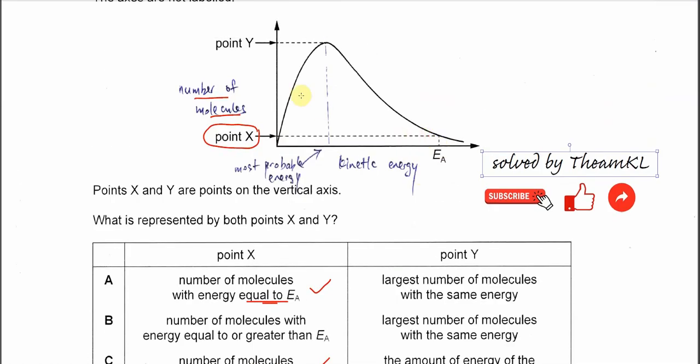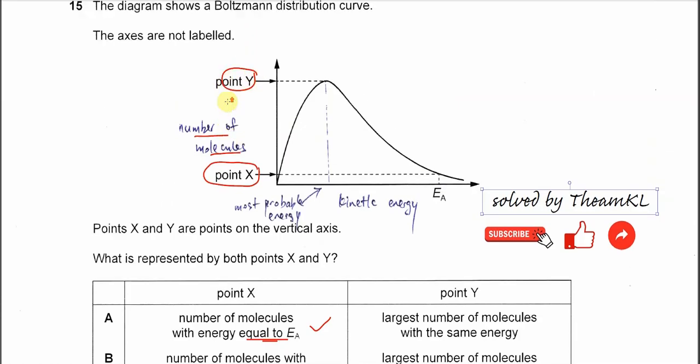Now for point Y. Point Y also represents the number of molecules. And this number of molecules now with this energy. So this energy is what we call the most probable energy.